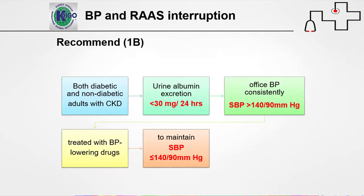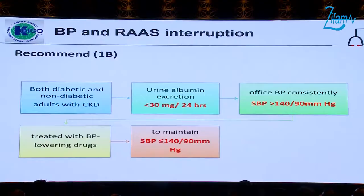For blood pressure and proteinuria, both diabetic and non-diabetic patients with protein in the urine less than 30 milligrams per 24 hours — and where office BP is consistently above 140/90 — we have to treat with BP-lowering agents and maintain blood pressure below 140/90.